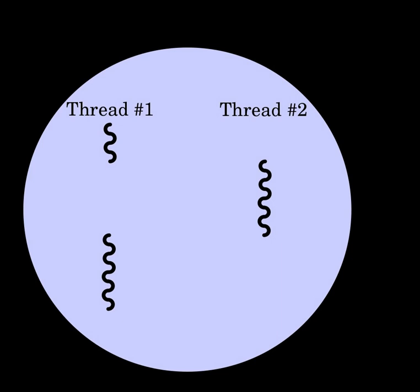The simplest type of multi-threading occurs when one thread runs until it is blocked by an event that normally would create a long latency stall. Such a stall might be a cache miss that has to access off-chip memory, which might take hundreds of CPU cycles for the data to return.